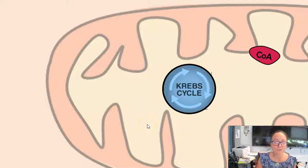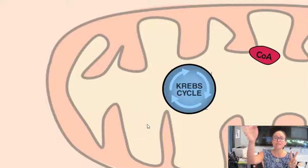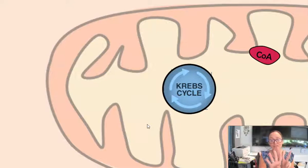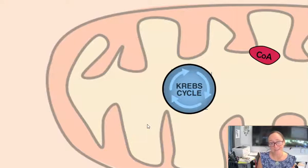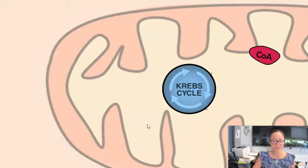The Krebs cycle is also known as the citric acid cycle because the two-carbon acetyl, in the very first step of the Krebs cycle, attaches to a four-carbon molecule, forming a six-carbon molecule called citric acid or citrate. So if you ever see it called the citric acid cycle, that is why — it's really the same thing.